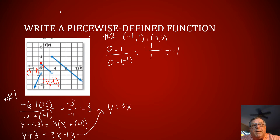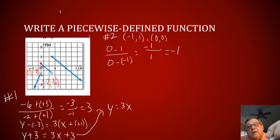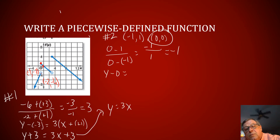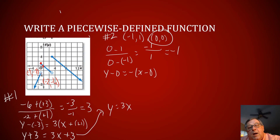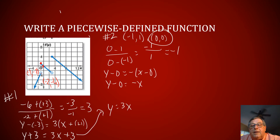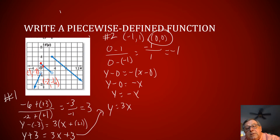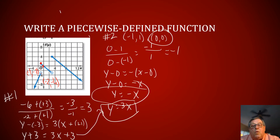Now that I have that, I'll use point-slope again to write the expression. This one actually passes through the origin, which makes it easy. Using coordinate zero, zero: Y minus zero equals negative one times X minus zero. So Y equals negative X. My second piece is Y equals negative X.